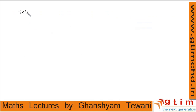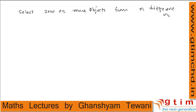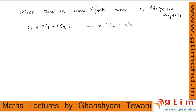Now suppose we want to select zero or more objects from n different objects. Selecting zero objects gives nC0 ways, selecting one gives nC1, selecting two gives nC2, up to selecting all objects which is nCn. The sum of all these is 2 power n, so this is the number of ways of selecting zero or more objects from n different objects.